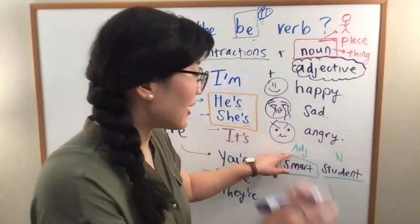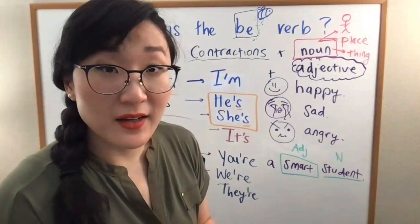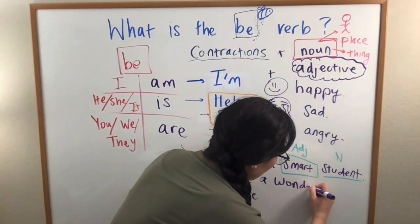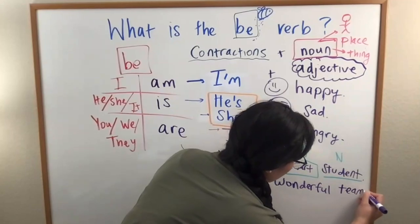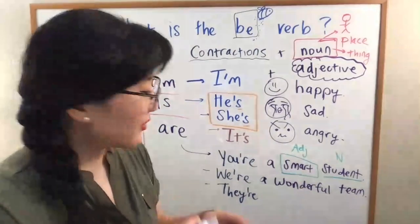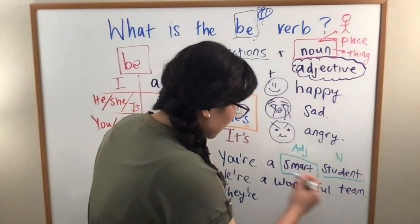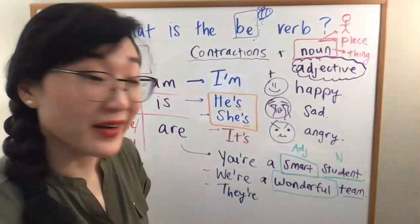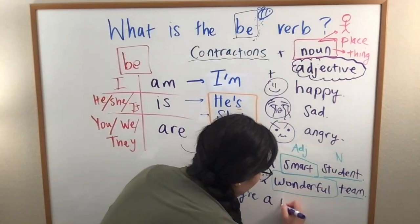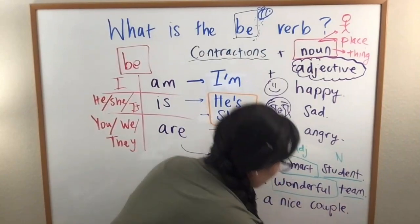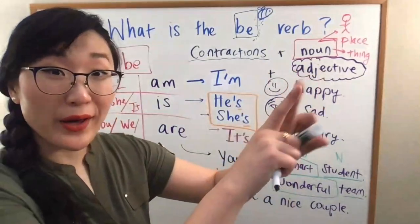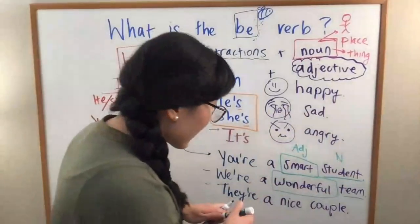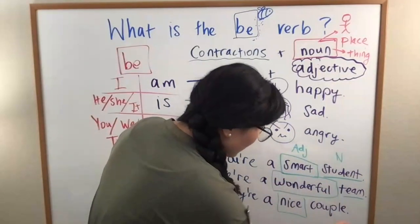So, A first and then the N. So, adjective and then a noun. We're a wonderful team. A team. We work together. Wonderful is my adjective. Team is my noun. They're a nice couple. I meet a husband and wife and I think, wow, they are very nice. So, they, they are a nice, my adjective, couple is my noun.